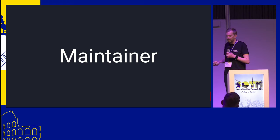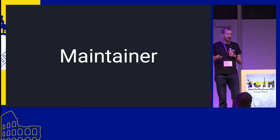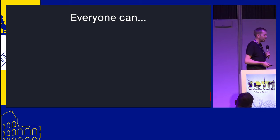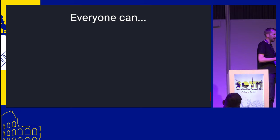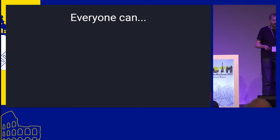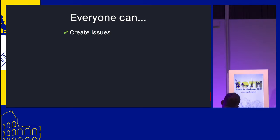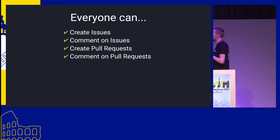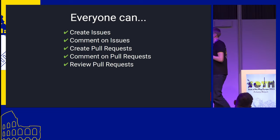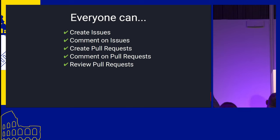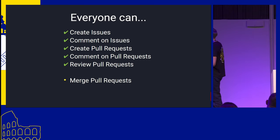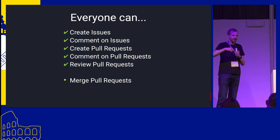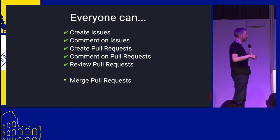So what is the role of a maintainer — what's the difference between a volunteer developer and a volunteer maintainer? We use GitHub, and everyone without needing approval can create issues, comment on issues, create pull requests, comment on pull requests, and review other people's pull requests. The only thing they can't do is merge pull requests. But pressing the merge button is the easy part of the process — I can click that button all day long, it's not very hard.